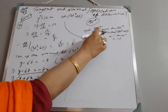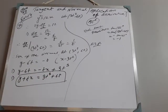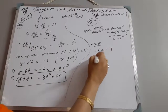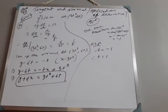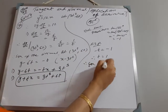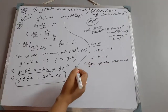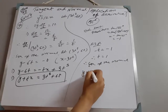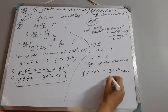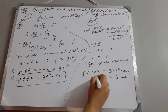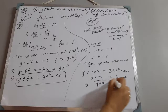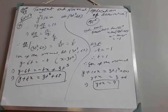According to the problem, the gradient of the normal is −1, and we already have the gradient of the normal as −t. So −t = −1, giving t = 1. Therefore, the equation of the normal when t = 1: y + 1·x = 3(1)³ + 6(1) = 3 + 6 = 9. So y + x = 9. This is the answer.